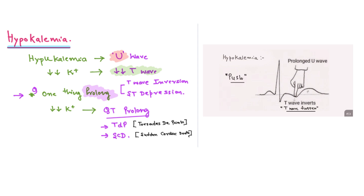One thing that is prolonged in hypokalemia — inversely proportional to the levels of the electrolyte — is the QT interval. So QT prolongation is seen in hypokalemia, and that will lead to torsades de pointes and sudden cardiac death in these patients. You can see from the ECG there is a pushing effect. Overall, the changes are: prominent U wave, T wave inversion, ST depression, and prolonged QT interval.